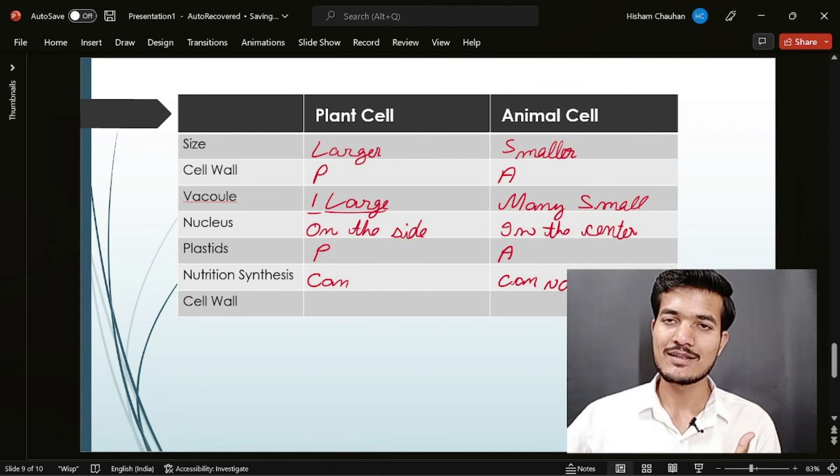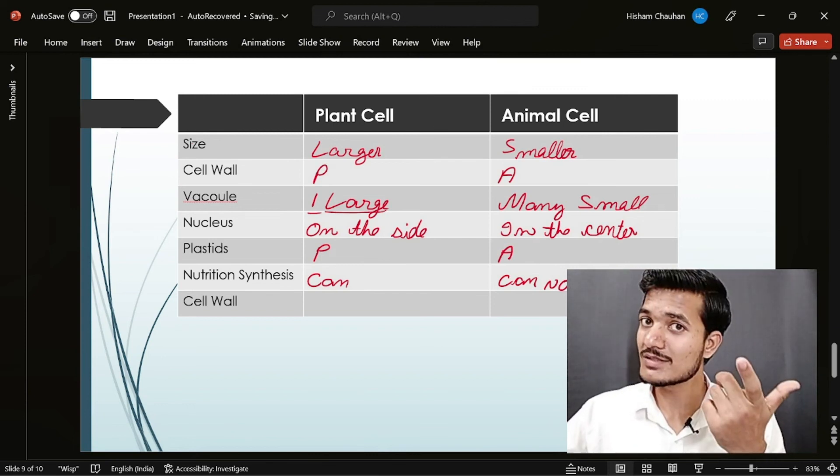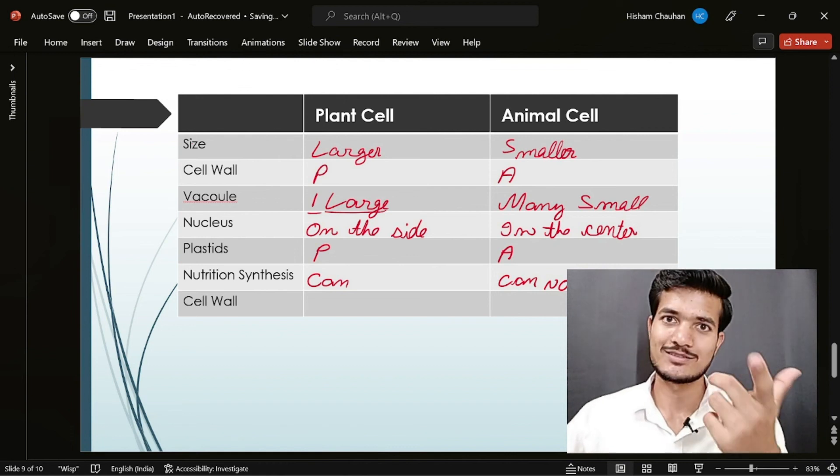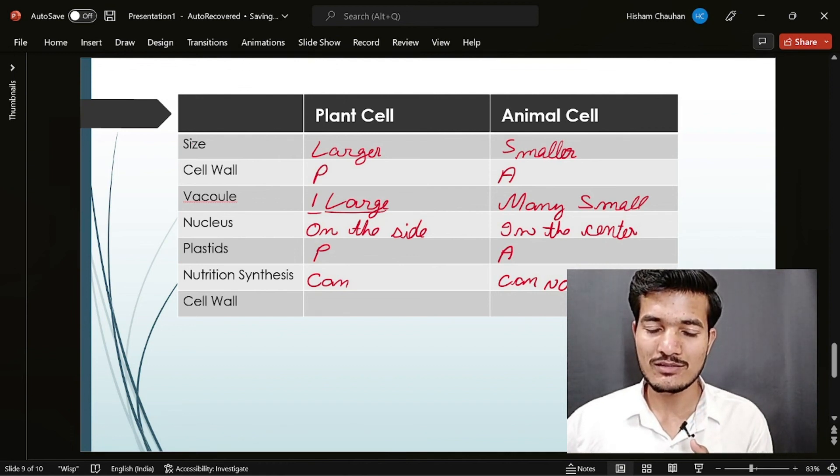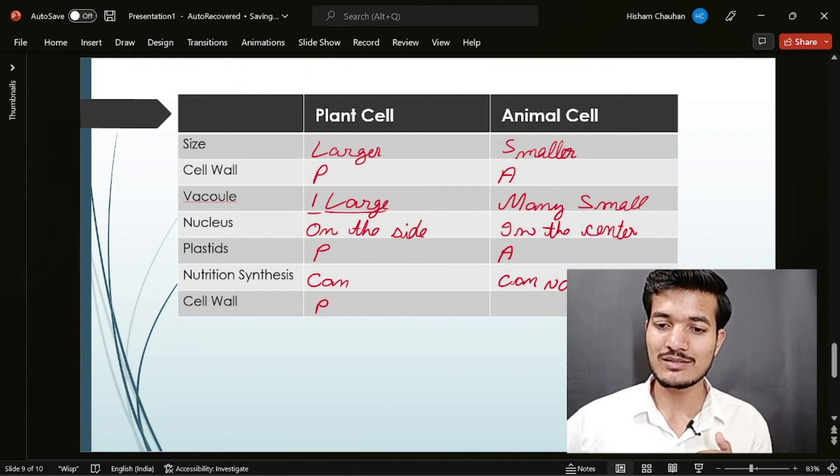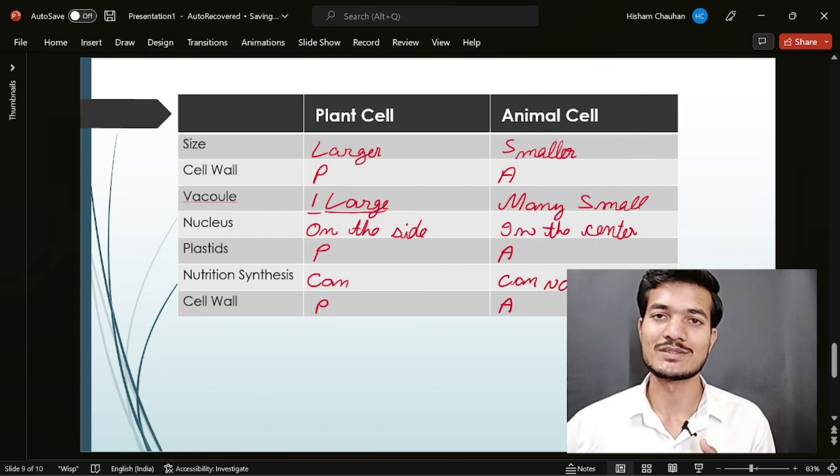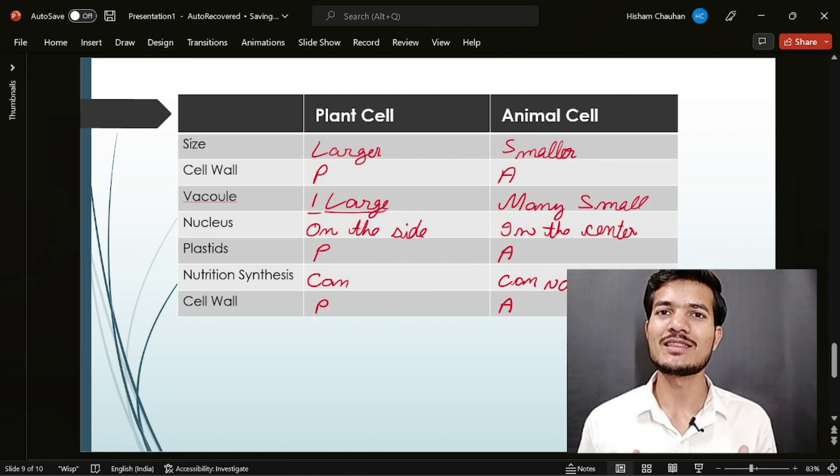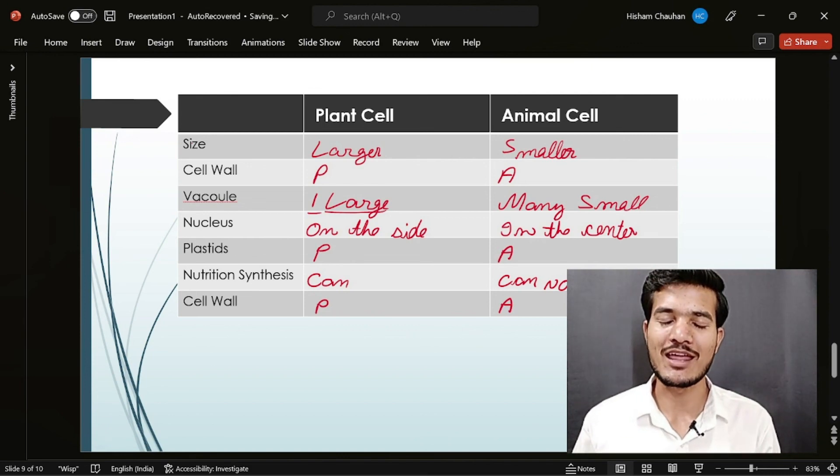And the last, cell wall. It was present in which cell, animal or plant? Yes, cell wall is present in the plant cells, which is absent in the animal cells. I hope you really enjoyed the class. We'll meet in the next sessions like these. And till then, very happy learning. Have a great day.